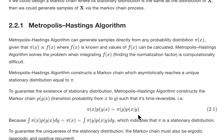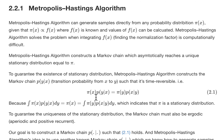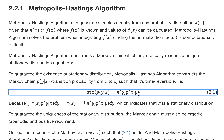So the Metropolis-Hastings algorithm is here to construct a Markov chain which asymptotically reaches a unique stationary distribution equal to pi. To do that, there are two things to think about. First, we have to construct the Markov chain so that a stationary distribution exists. The Metropolis-Hastings algorithm does this by using a time-reversible Markov chain — we need to construct a Markov chain P which is time-reversible.